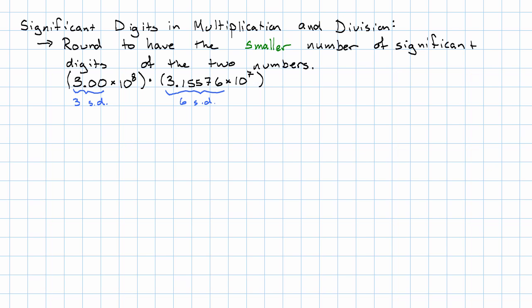This has 1, 2, 3, 4, 5, 6 significant digits. When we multiply them together, we're going to round to three significant digits. So let's see what that looks like.